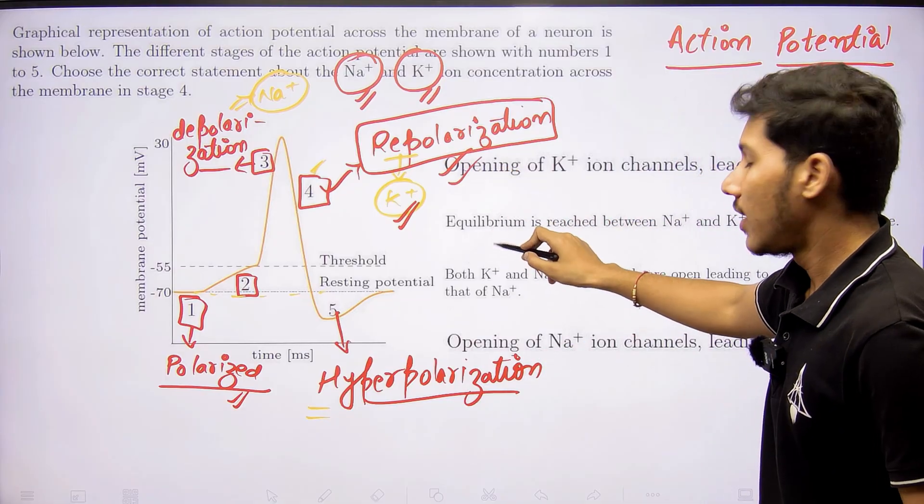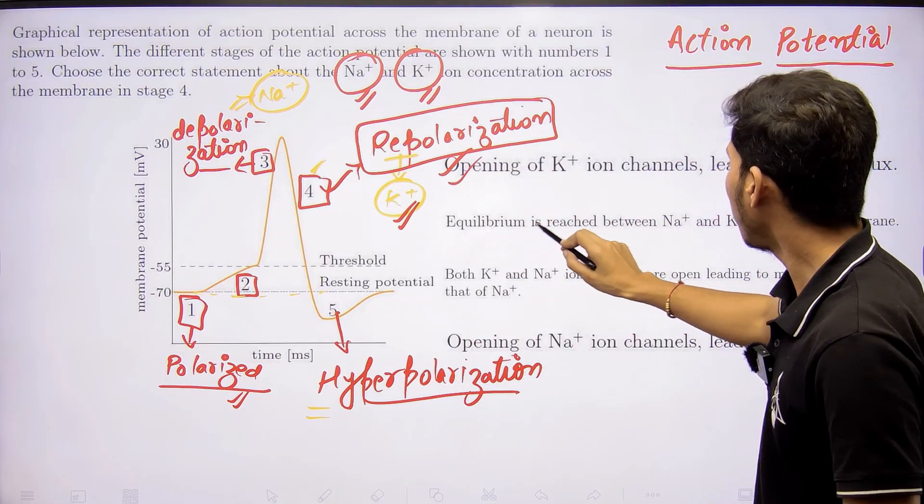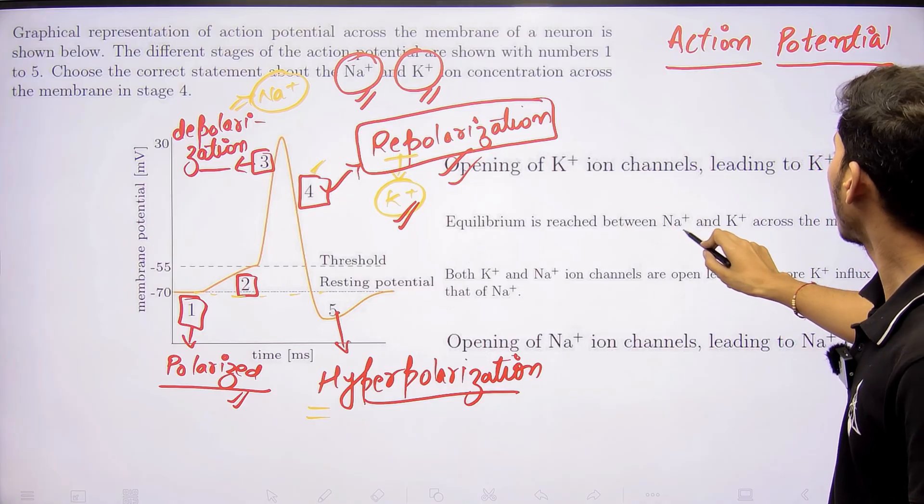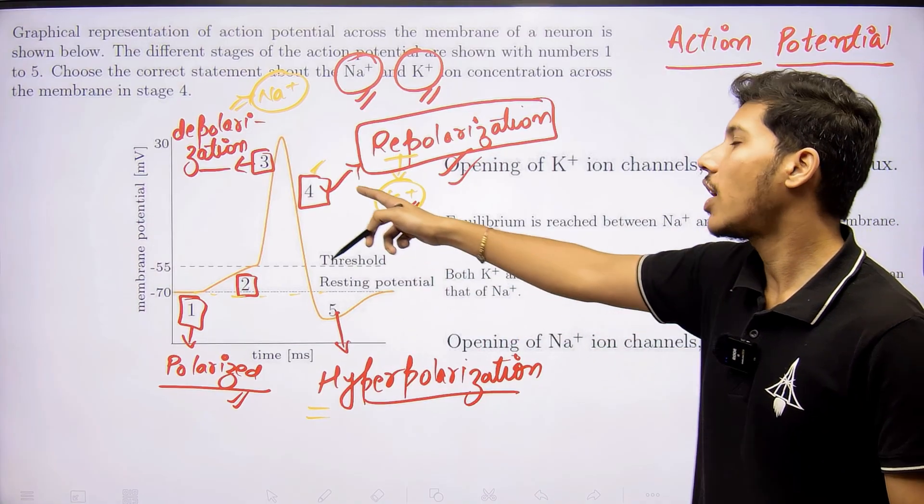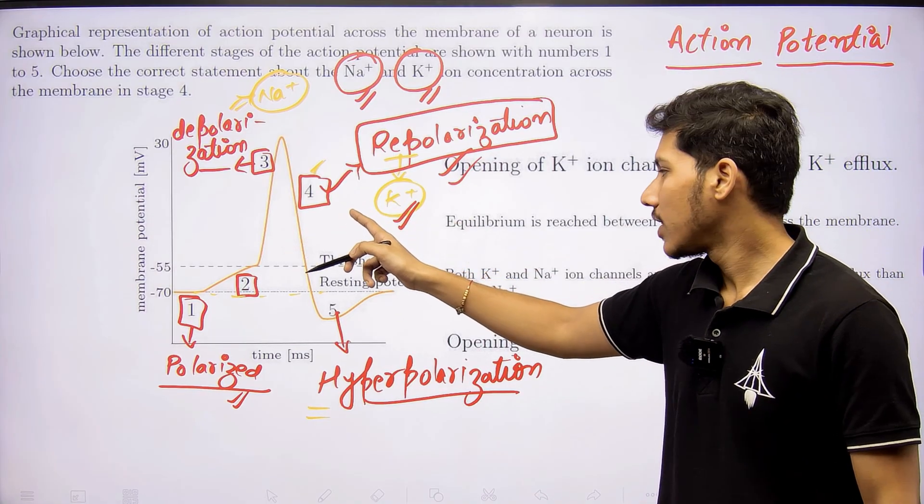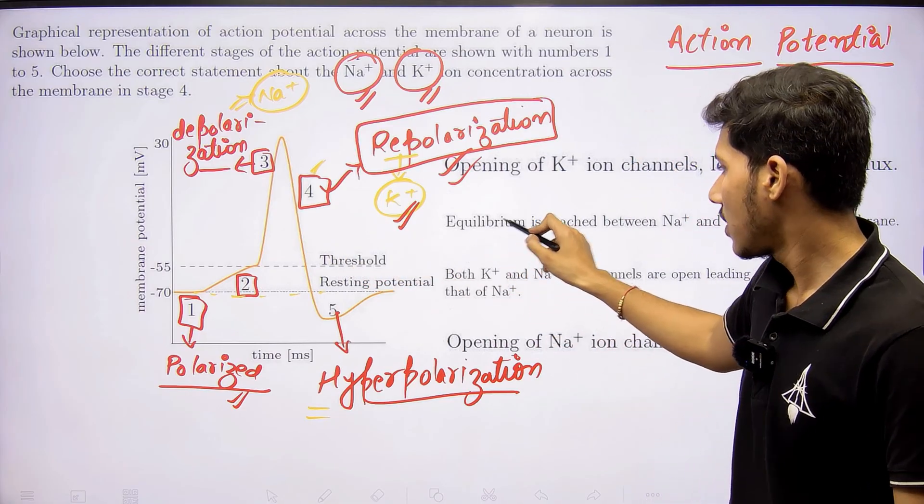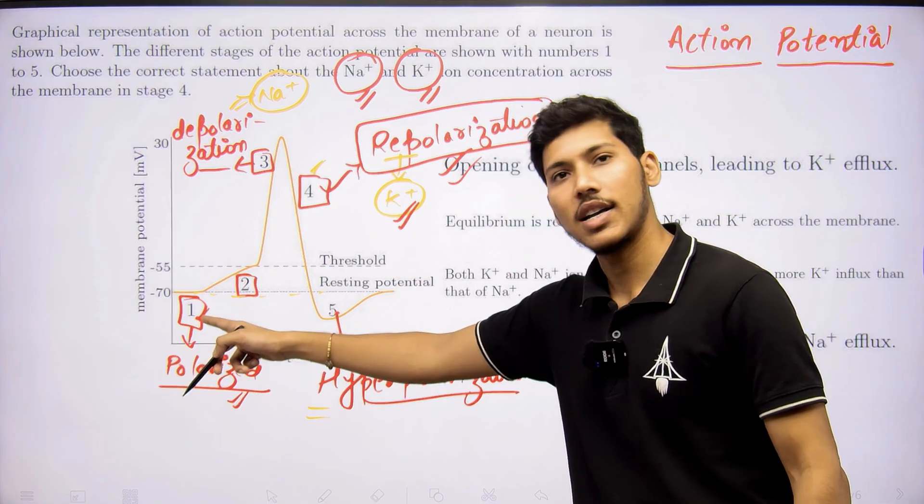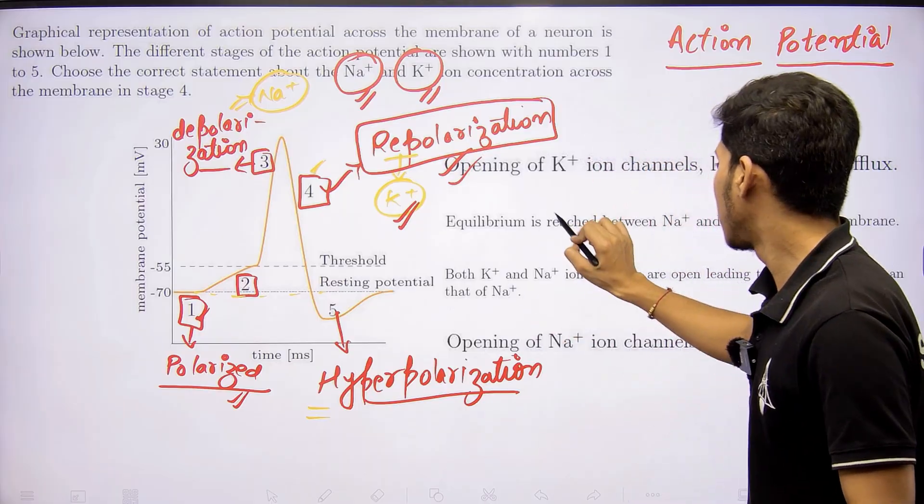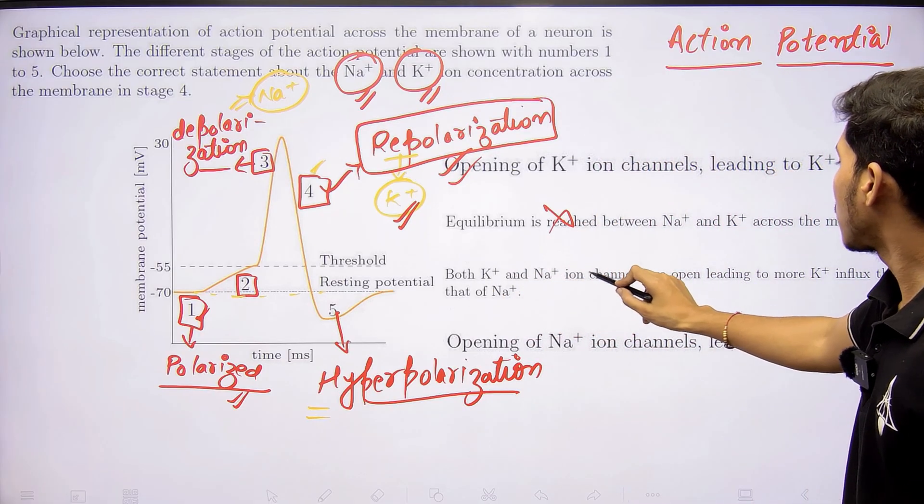Now let's see the other options. Equilibrium is reached between sodium and potassium across the membrane - not in step four. This happens at stage number one. This is wrong.